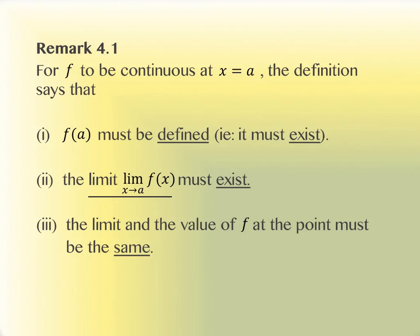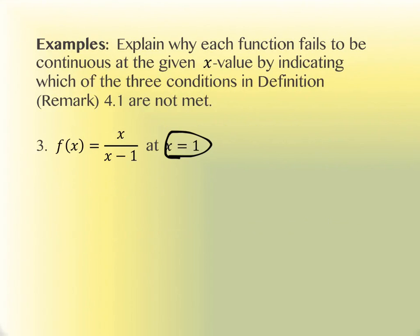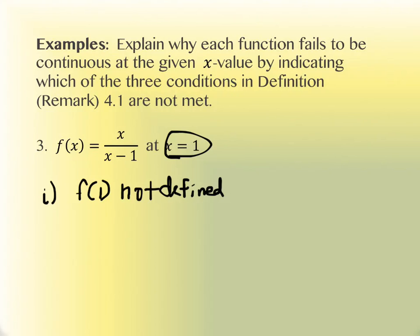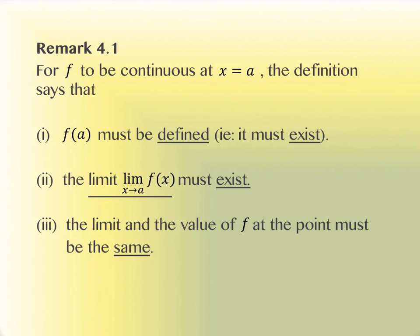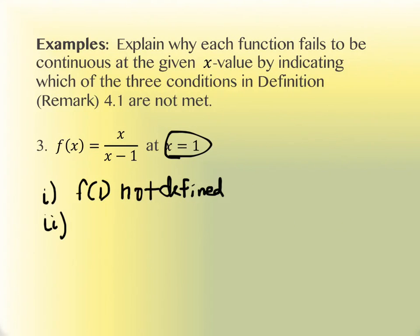Looking at which pieces of the remark fail here: the function must be defined, so the function is not defined — number one fails. f(1) is not defined, or you could say it doesn't exist, because I can't plug 1 in. As for the second point — is the limit going to exist? It's actually not going to exist either, so the limit does not exist.